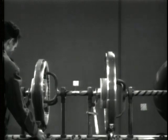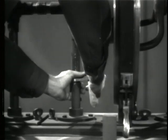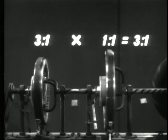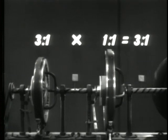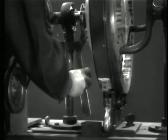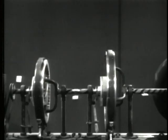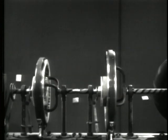By putting the small set in reduction and the large one in direct drive, we get a three to one reduction, or third speed. With both sets of gears placed in direct drive, we get a ratio of one to one with no gear reduction. That's fine for forward.